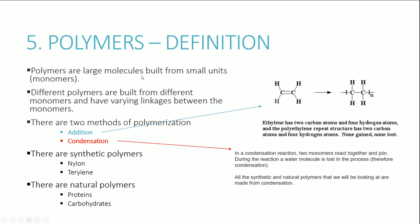Polymers are large molecules built from smaller units called monomers. Different polymers are built from different monomers with varying linkages. There are two main methods of polymerization: addition (which we've already covered) and condensation. In a condensation reaction, two monomers join together and a water molecule is lost in the process — hence 'condensation'. All the synthetic and natural polymers in this course are forms of condensation polymerization.